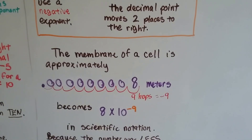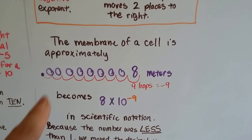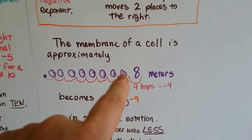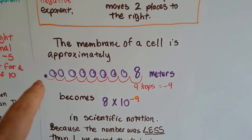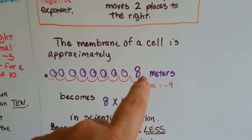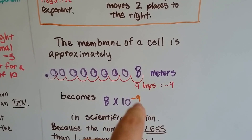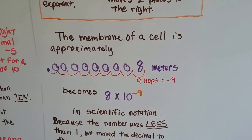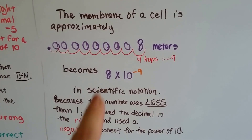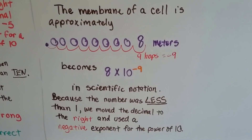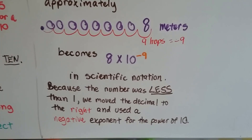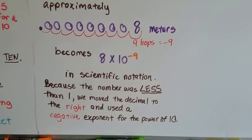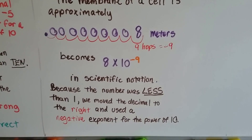The cell membrane is approximately 0.000000008 meters. We can do nine hops to get our decimal point to the side of the eight. That's going to mean a negative nine for our exponent, for our power of ten. We'll end up with 8 times ten to the negative nine in scientific notation. Because the number was less than one, we moved the decimal to the right and used a negative exponent for the power of ten.